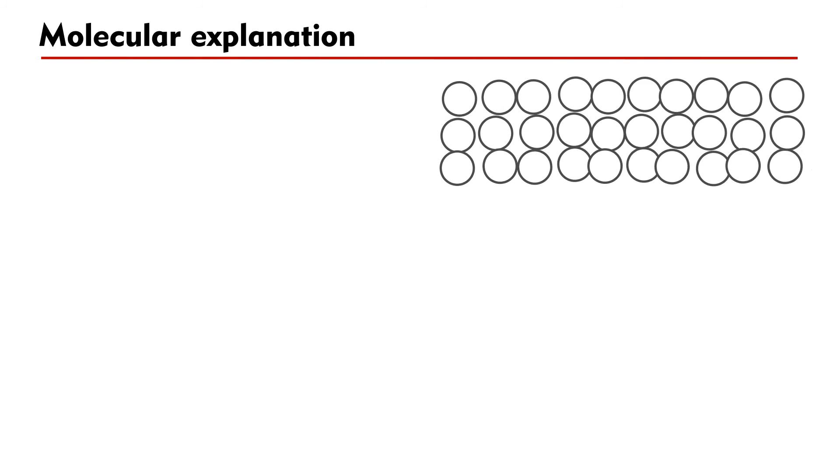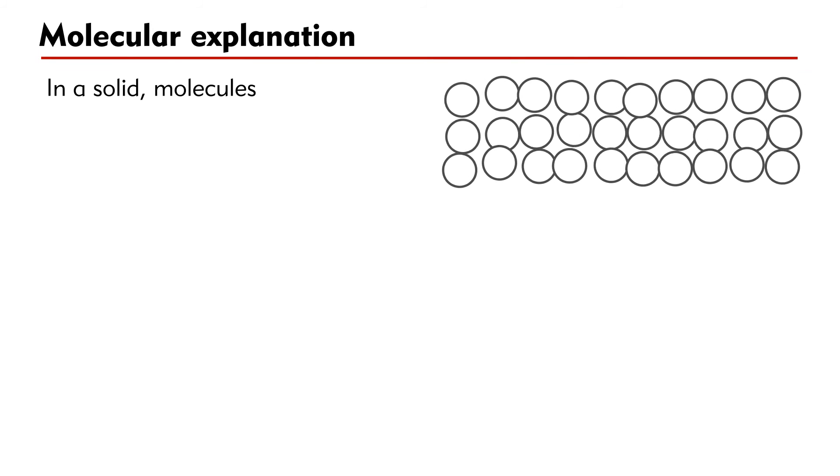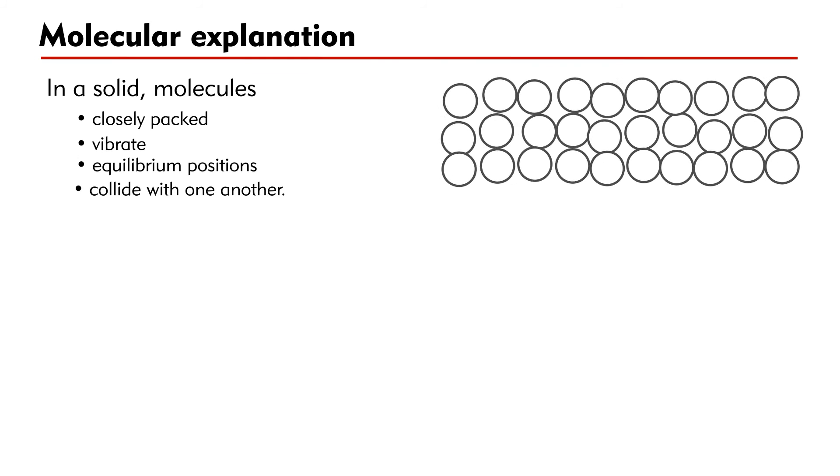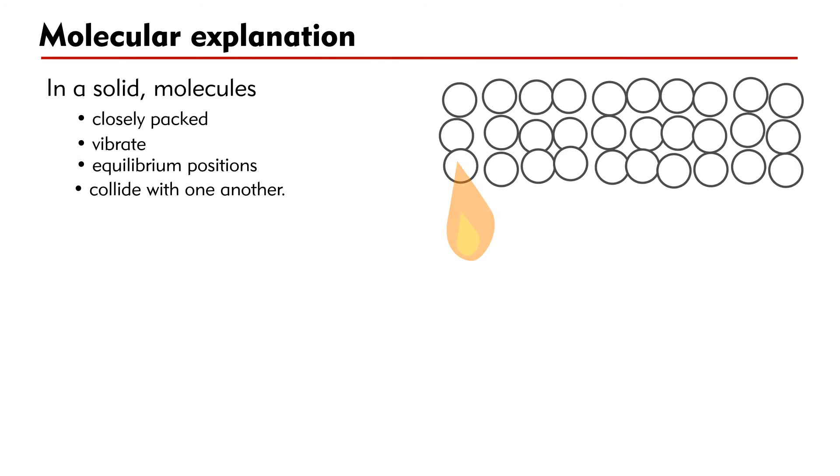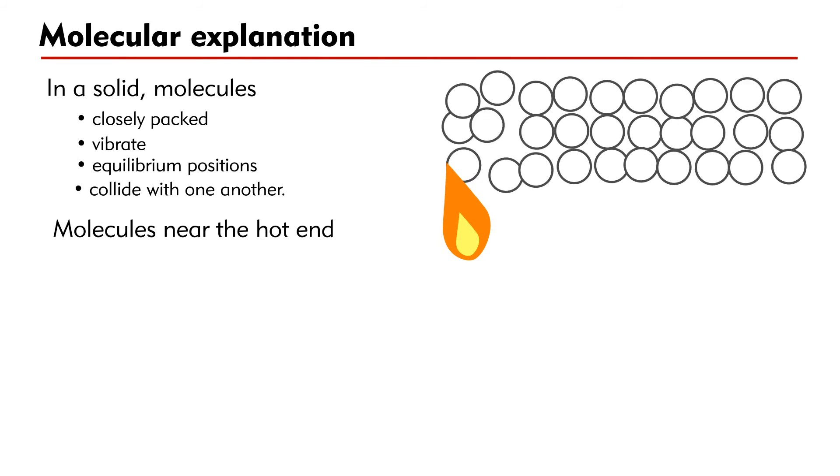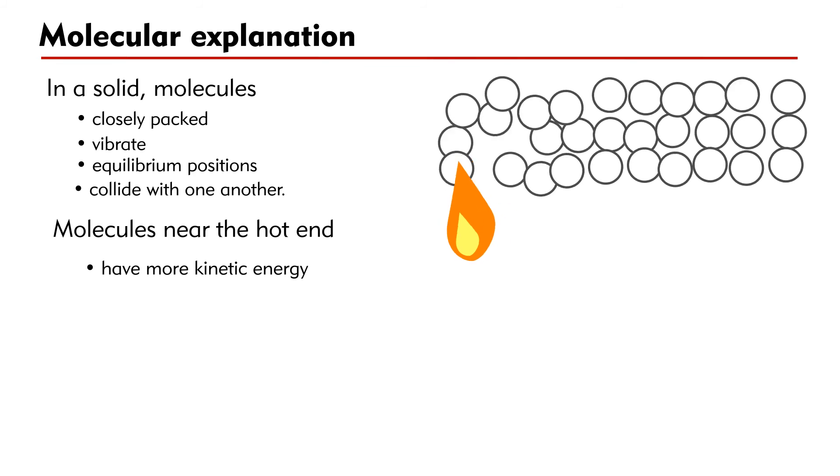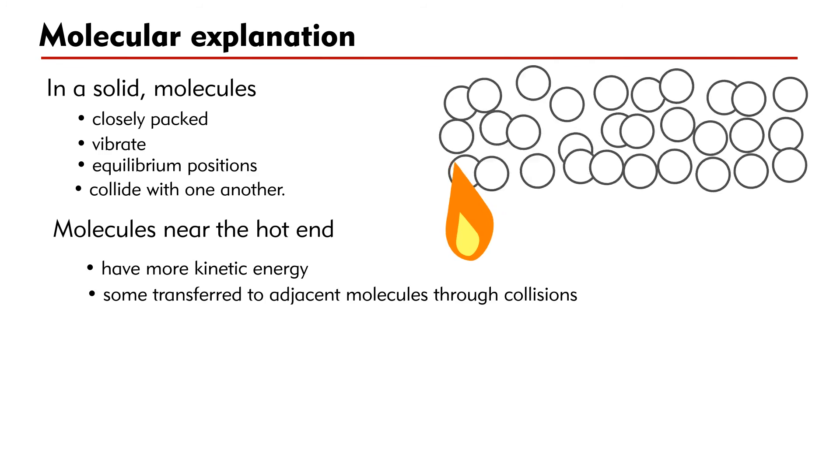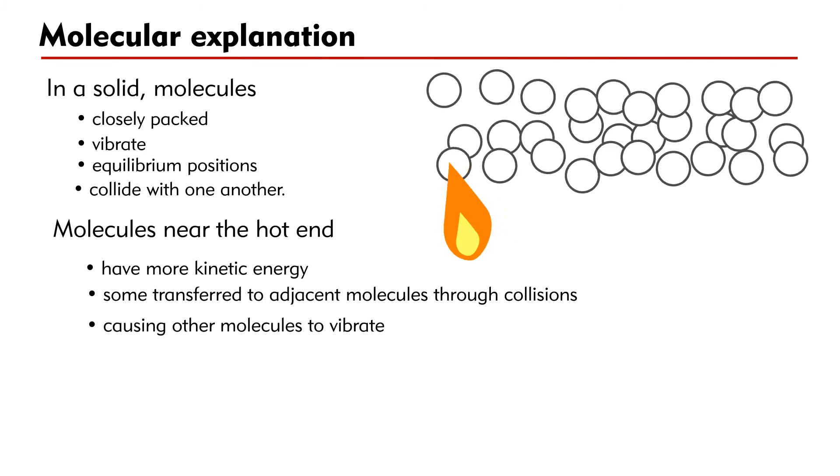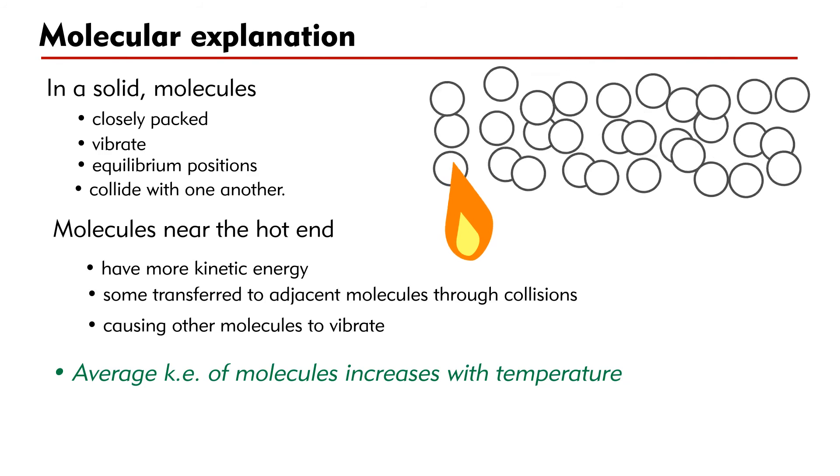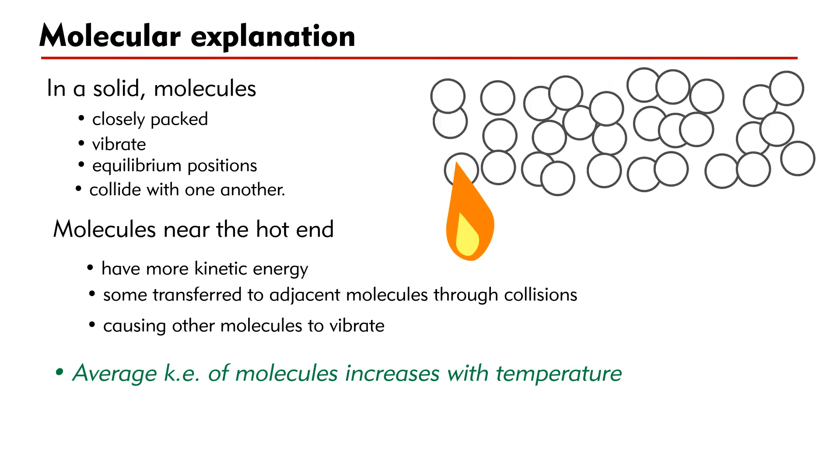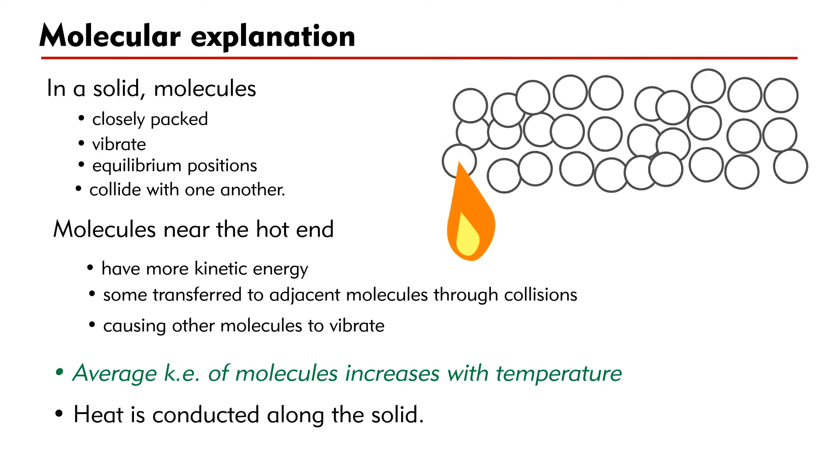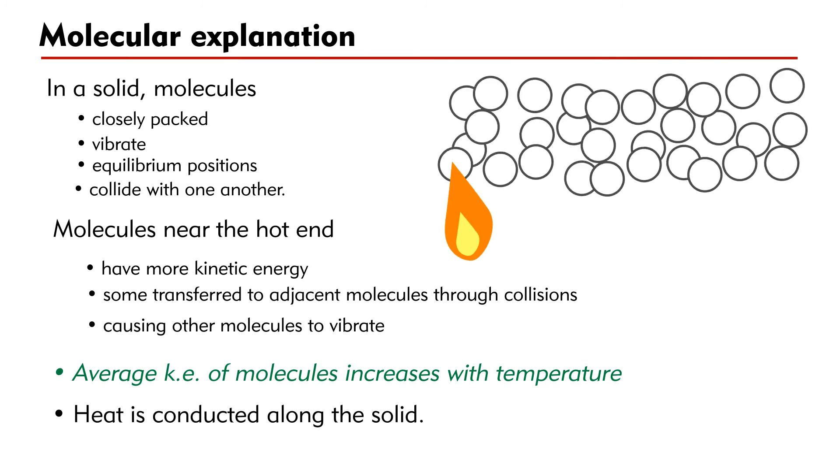How do we explain heat conduction in terms of molecular motion? In a solid, molecules are closely packed. They are vibrating about their equilibrium positions and they often collide with one another. The molecules near the hot end have more kinetic energy and vibrate more. Some of their kinetic energy will be transferred to adjacent molecules through collisions, causing other molecules to vibrate more. Since the average kinetic energy of molecules increases with temperature, the other part of the solid will be heated up. As a result, heat is conducted along the solid.